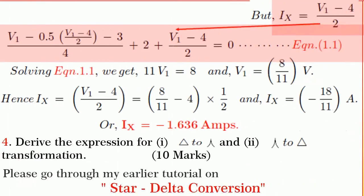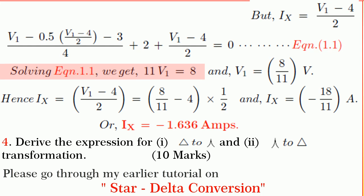So, by substituting for ix in the balance equation and solving it, we get 11 V1 is equal to 8 and V1 is equal to 8 divided by 11 volts. So, ix is equal to V1 minus 4 divided by 2 by substituting for V1 and solving it, we get ix is equal to minus 1.636 amperes.